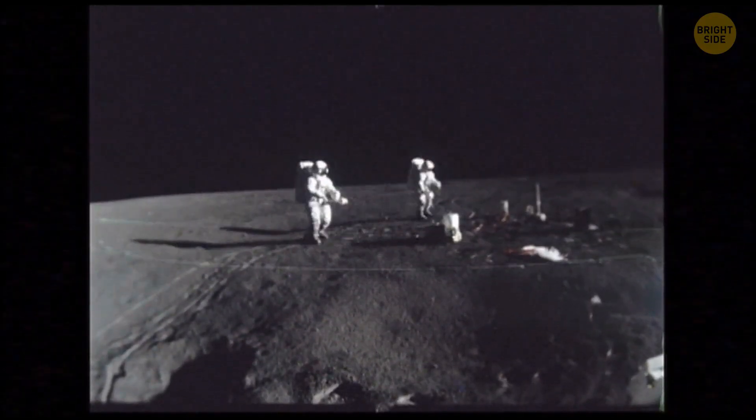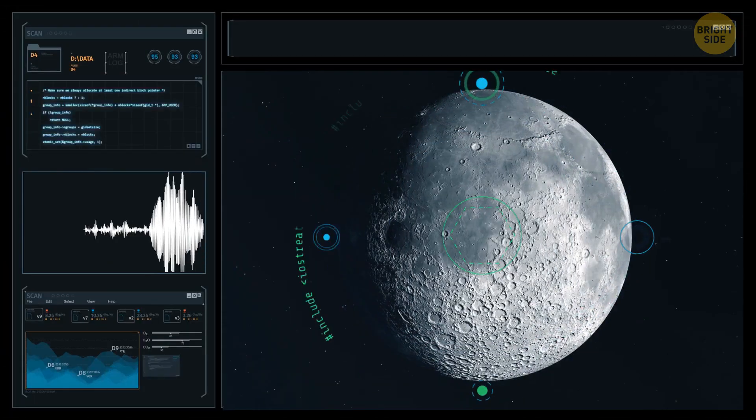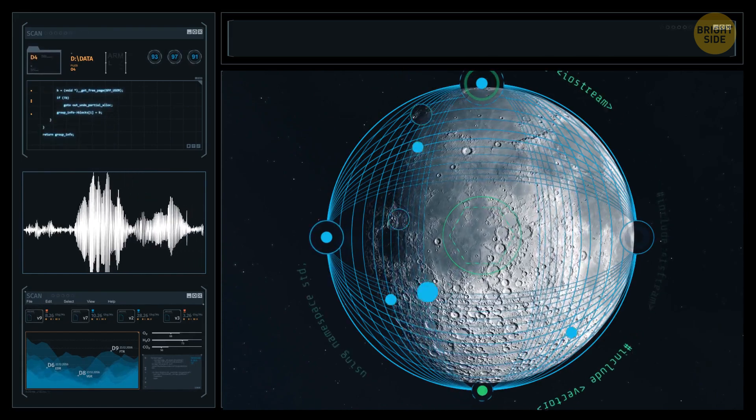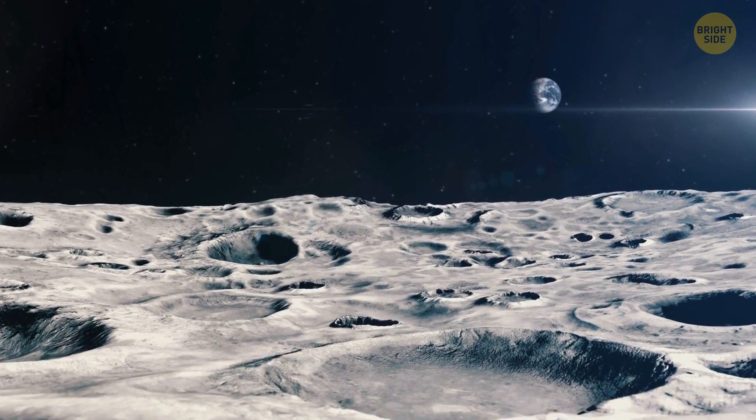Another device was set up to measure moonquakes and potential meteor impacts. We know today that the most powerful moonquakes are much weaker than earthquakes, even though they can last for up to an hour, way longer than that of Earth.